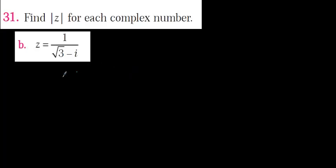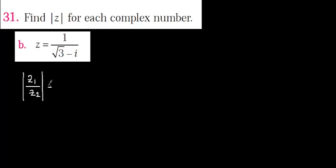In this question I'm going to explain the properties of z modulus. If you remember the division property about the z modulus, it was like this: the modulus of z1 over z2 is equal to the modulus of z1 over the modulus of z2. Here there are two complex numbers — one has only a real part, and the denominator is equal to root 3 minus i.